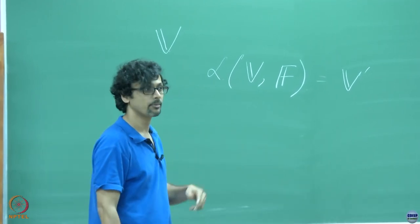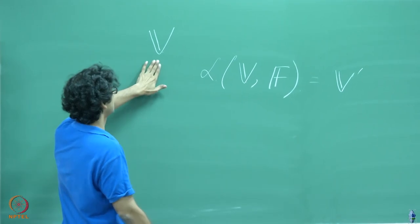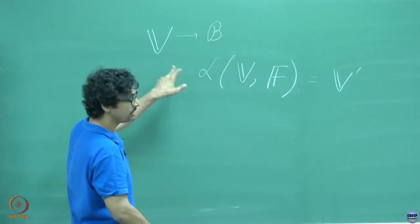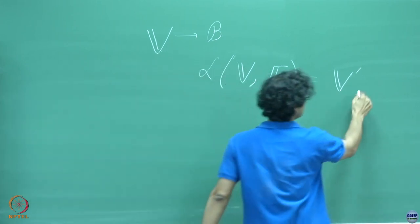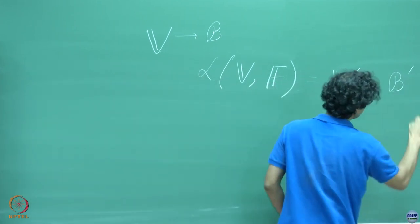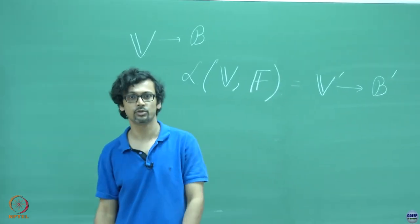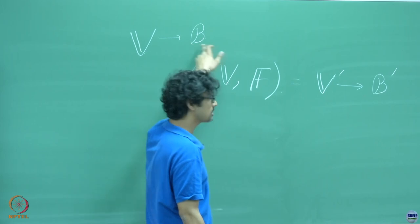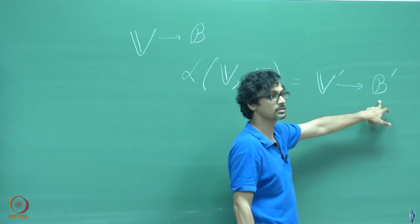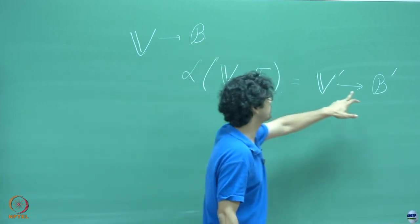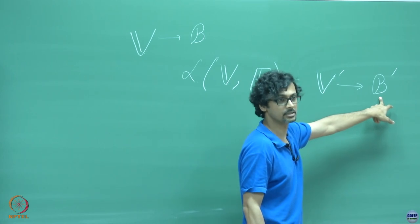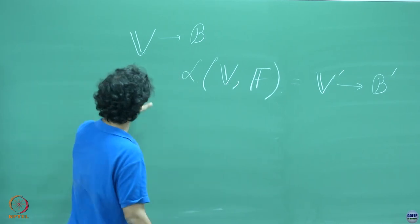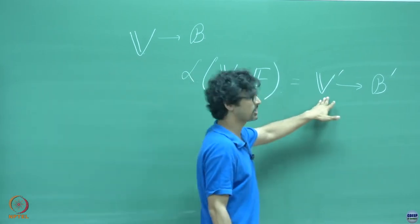Subsequently, we also saw that given any basis in this vector space V, you can always find a dual basis in V prime. We also showed explicitly how the members in this original basis and the dual basis are related, so that given this basis, you can cook up this particular basis. And thereby, we have also shown that the dimensions of V and V prime must be the same.